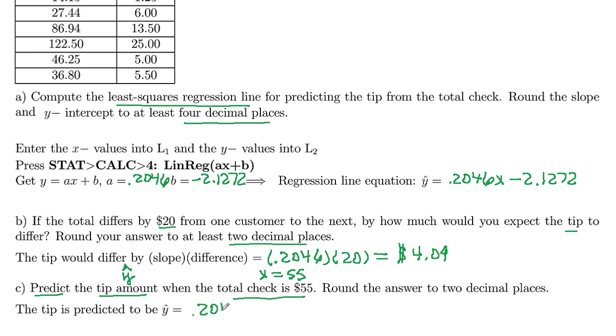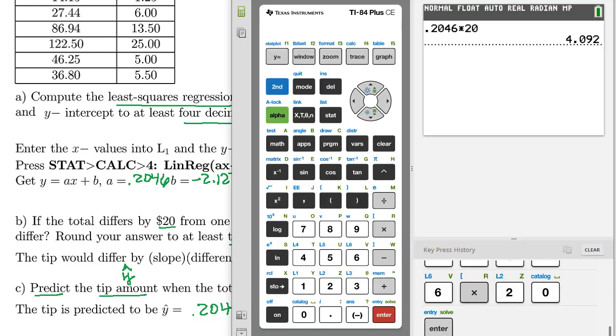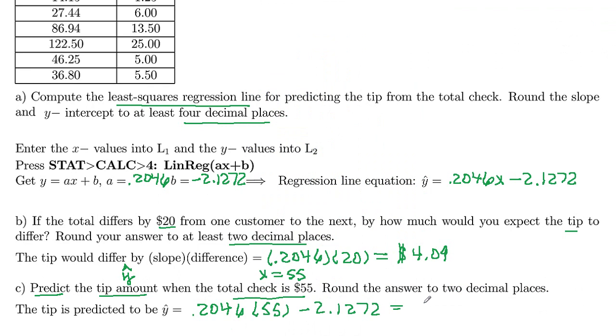So 0.2046 times 55, and then we're going to subtract off that 2.1272, and then round our final answer to two decimal places. So 0.2046 times 55 minus 2.1272. So $9.13. So we would predict a tip of approximately $9.13 on a $55 check.